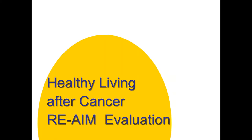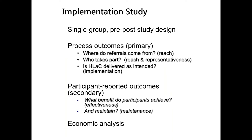I'm going to talk about how we actually apply RE-AIM in the context of this Healthy Living After Cancer project. This is an implementation study — a single-group pre-post design. The process outcomes are our primary outcomes: where referrals come from, who's taking part and their representativeness, and whether cancer councils can implement this intervention as part of their service delivery. Participant-reported outcomes are important but are pitched as secondary outcomes, and we also have health economists conducting an economic analysis.